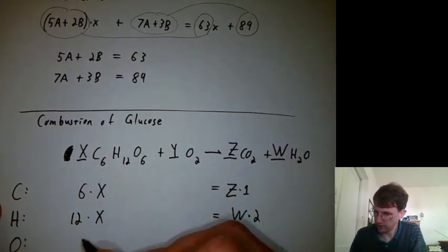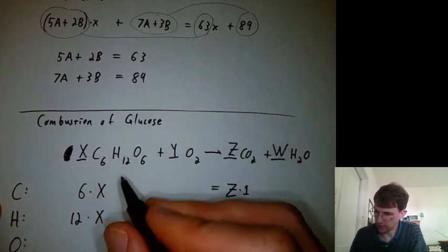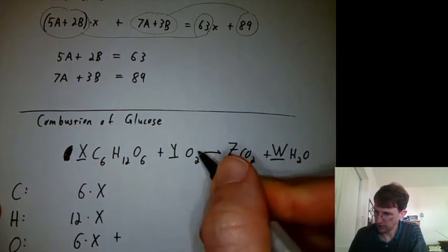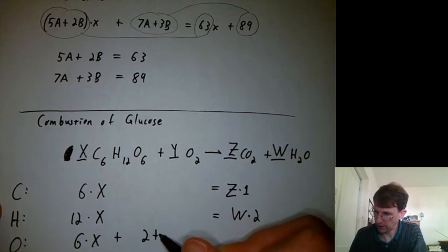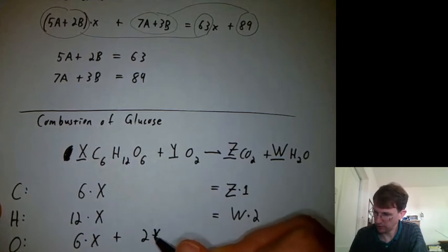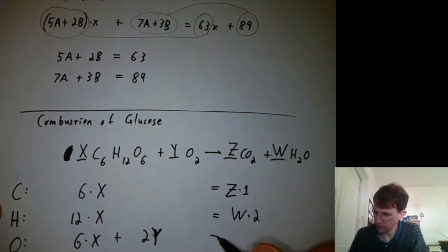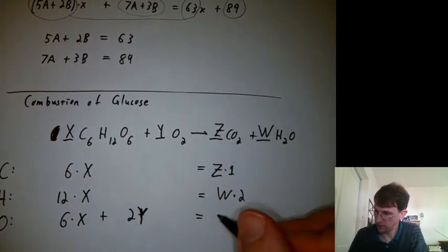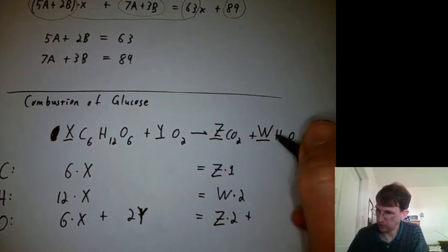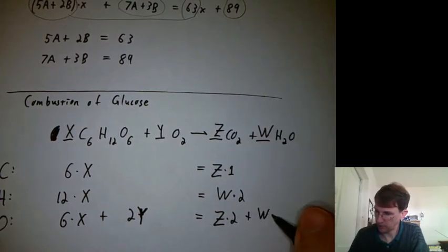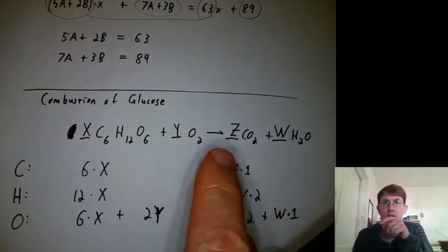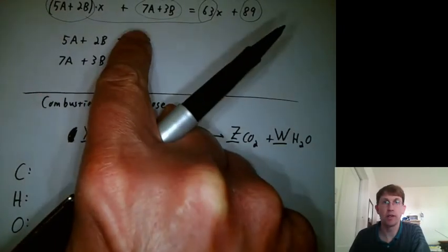And then for oxygens, how many oxygens do I have on this side? I have six X. And then I have another two Y. And how many oxygens do I have on this side? I have two Z or Z times two and one oxygen times the W.